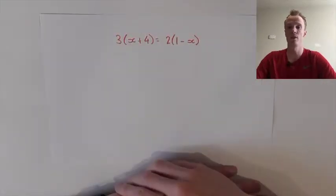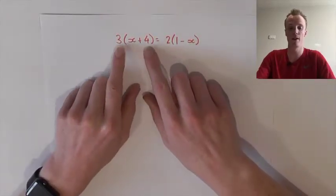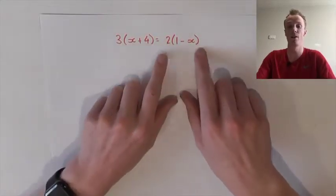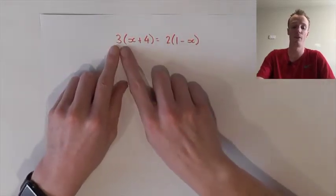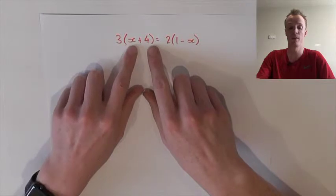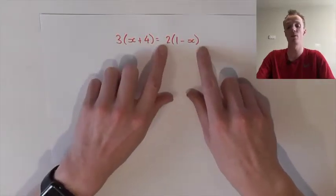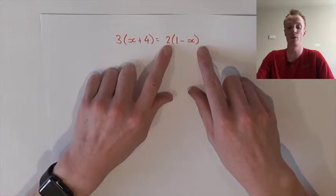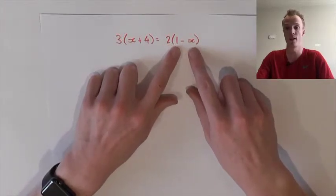The first type of problem we're going to explore today is where we have the x value appearing inside brackets on either side of the equation. So here we have 3 multiplied by everything inside this bracket, the x plus 4, that's equal to this side here where we've got 2 times everything inside the brackets, which is the 1 minus x.